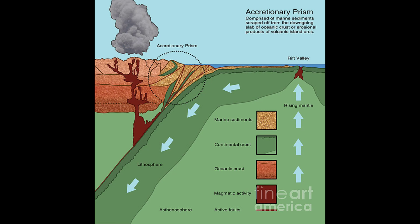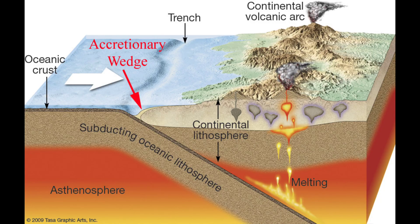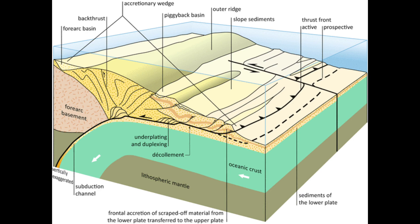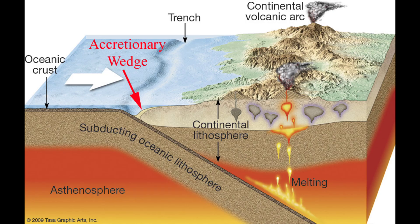Accretionary wedges grow by the gradual process of scraping sedimentary and volcanic rock material from the trench and subducting plate, which constantly pushes new material in front of and under the wedge. Plate tectonics drives plate convergence. Subducting plates with thin layers of deep-sea sediment such as chert on their basaltic surface yield packages in the accretionary wedge dominated by basalt and chert rock types.